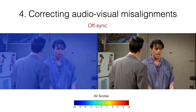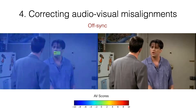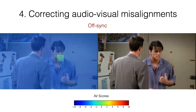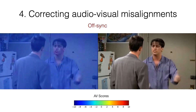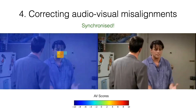The final application that we discuss is audiovisual synchronization in videos. Here is an example of a clip where we have synthetically shifted the audio significantly. Observe how when the audio and video streams are off sync, the attention map values are low. To synchronize the streams, we evaluate different shifts and select the one that maximizes the audiovisual score.